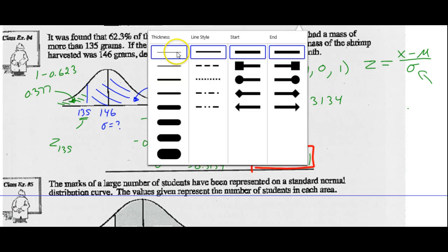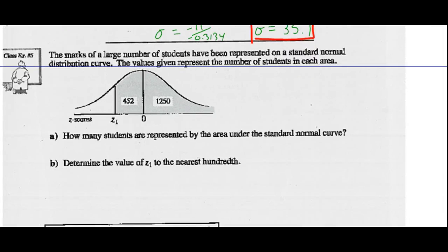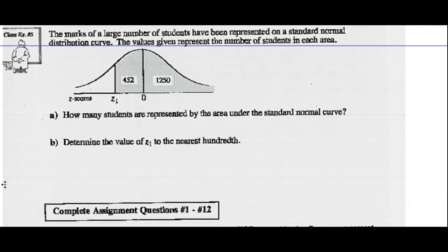Example 5. The marks of a large number of students have been represented on a standard normal distribution curve. The values given represent the number of students in each area. So between z-score 1 and 0, there's 452 people. Between 0 and the rest of the graph, there's 1,250 people. How many students are represented by the area under the standard normal curve? Well, if right of the mean is 1,250 and that's half the data, then the total number of students should be 2 times 1,250, or 2,500.